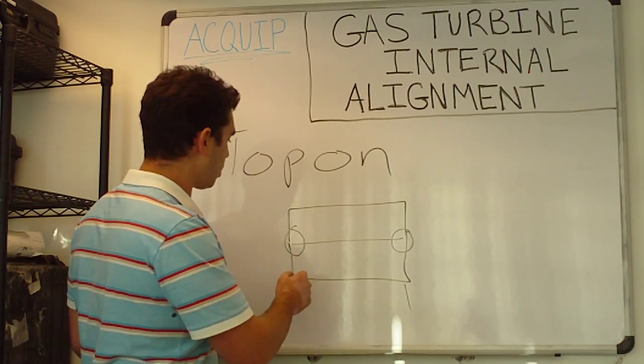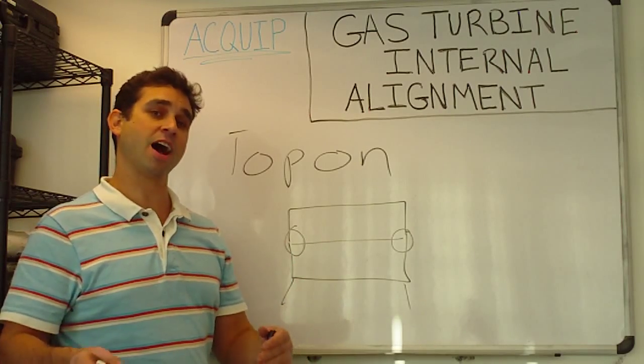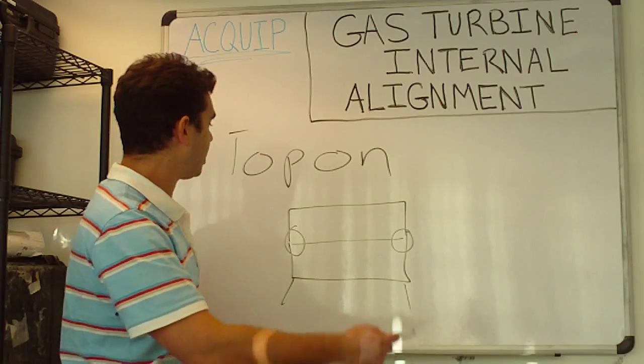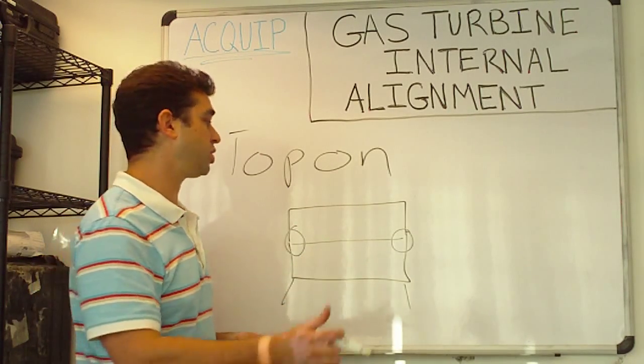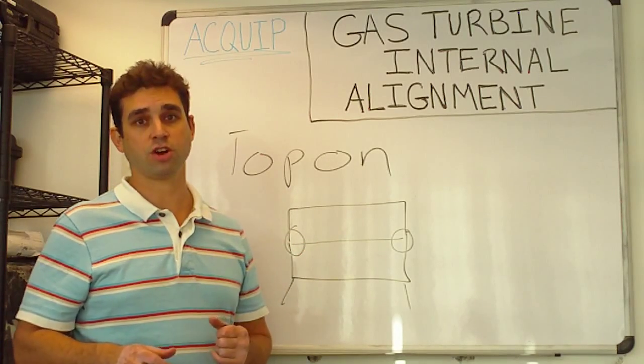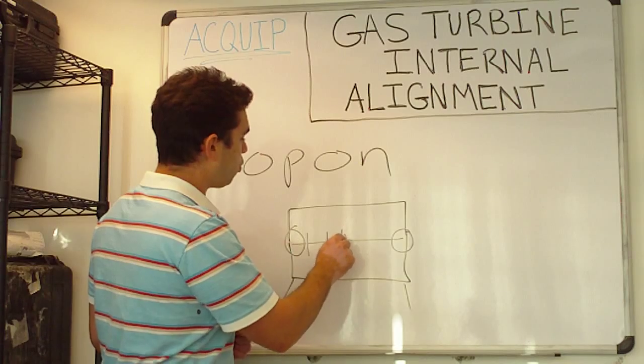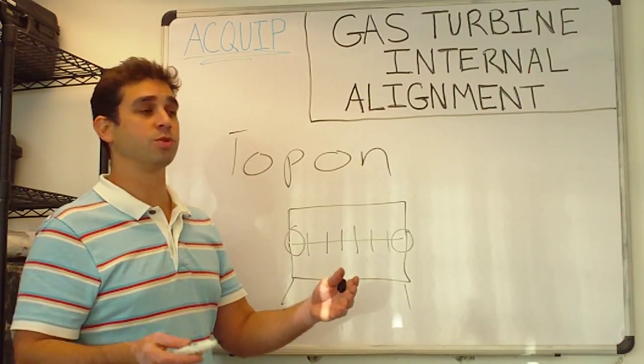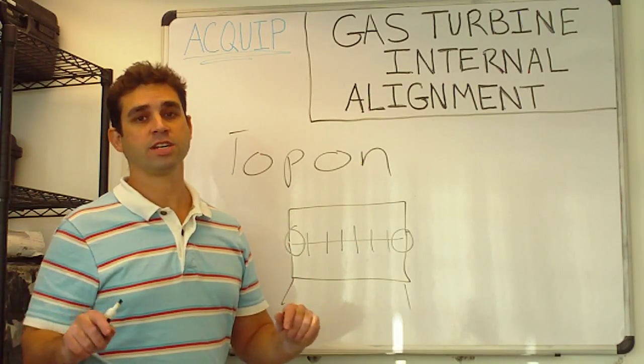So we want to make sure that whether we're doing a frame seven alignment or frame five or a frame six or we're doing a 501 alignment that we have all of the necessary and heavy components bolted back onto the turbine. Now we don't have to have all the bolts back in. What we normally like to do is have every other bolt in and torque down to specification.